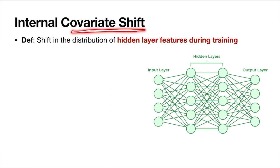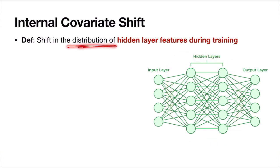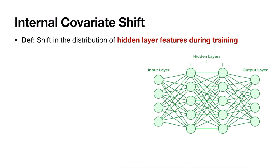Now we come to internal covariate shift. Covariate shift is distribution change in the dataset — that is external covariate shift. Internal means it is not happening in the dataset but in the internal activations of the hidden layers. The distribution change in the hidden layers during training is called internal covariate shift.